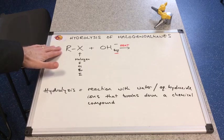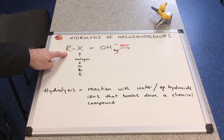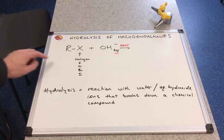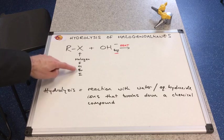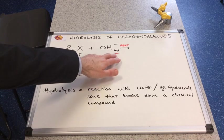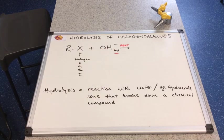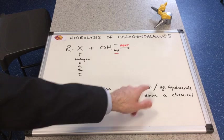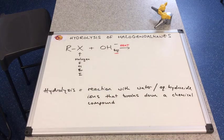We've got a carbon group, an R group bonded to a halogen. So that could be a fluorine, chlorine, a bromine or an iodine. Now in the presence of either aqueous hydroxide ions or water, this hydrolysis reaction will take place.